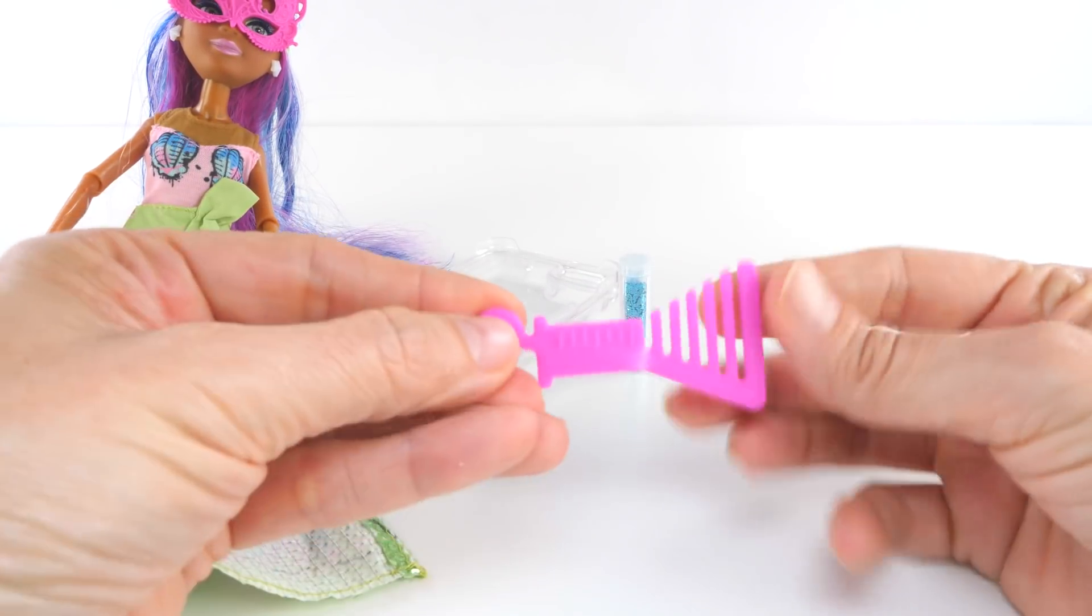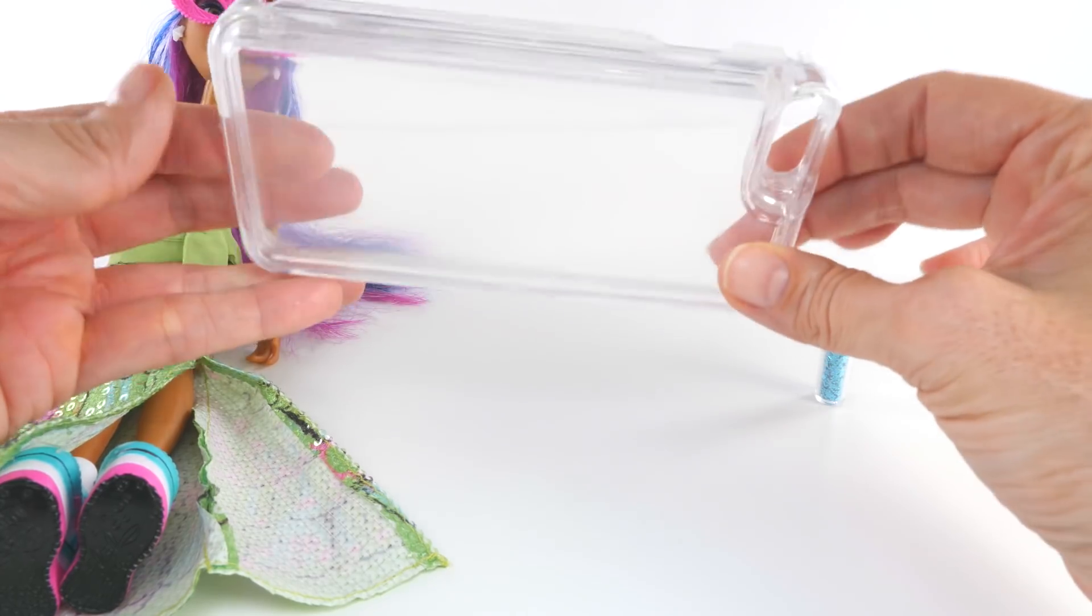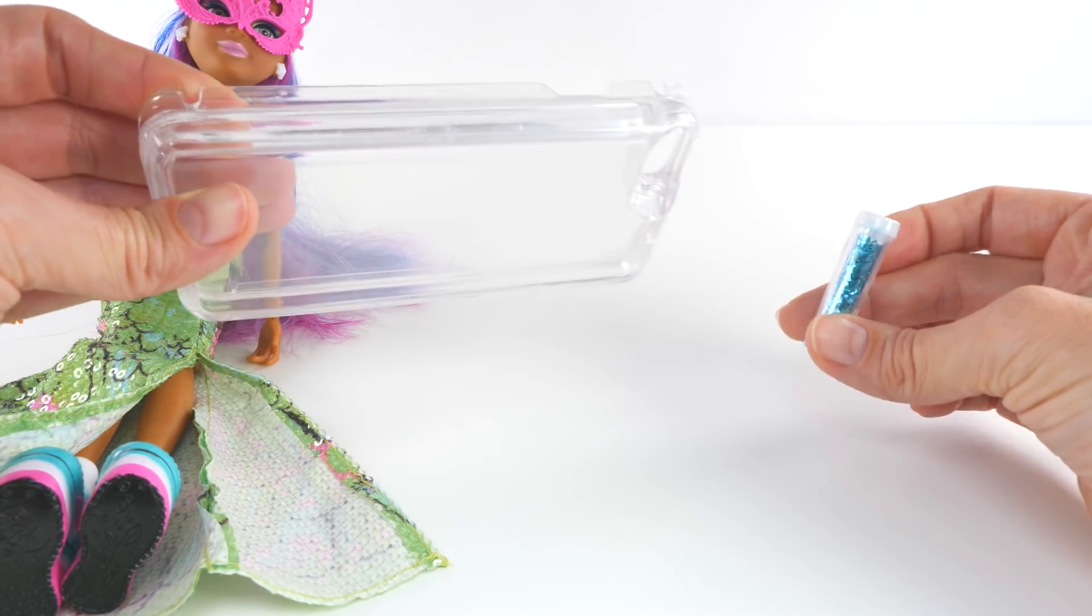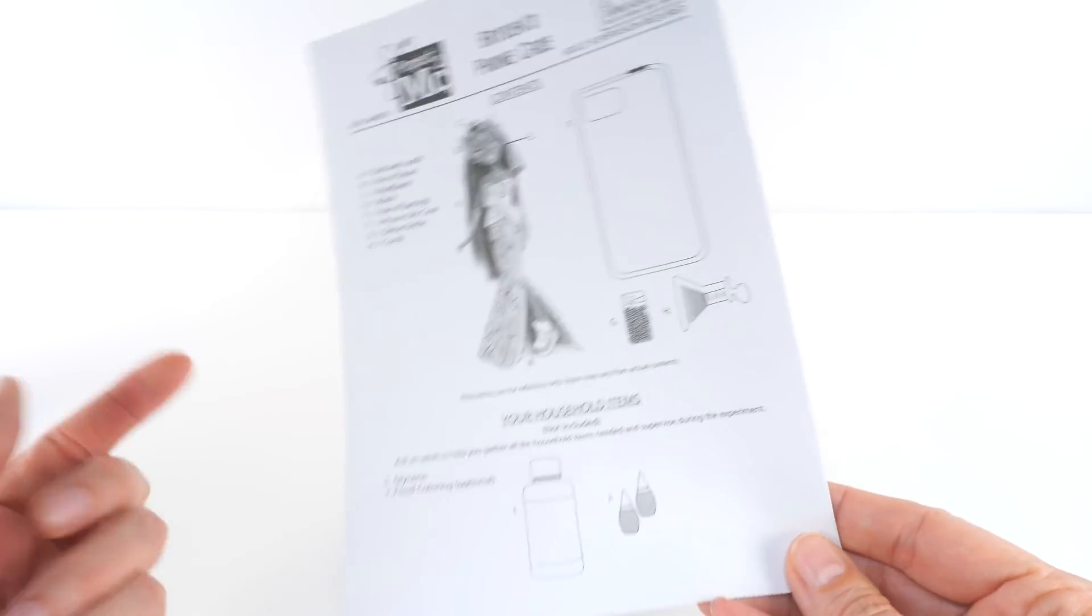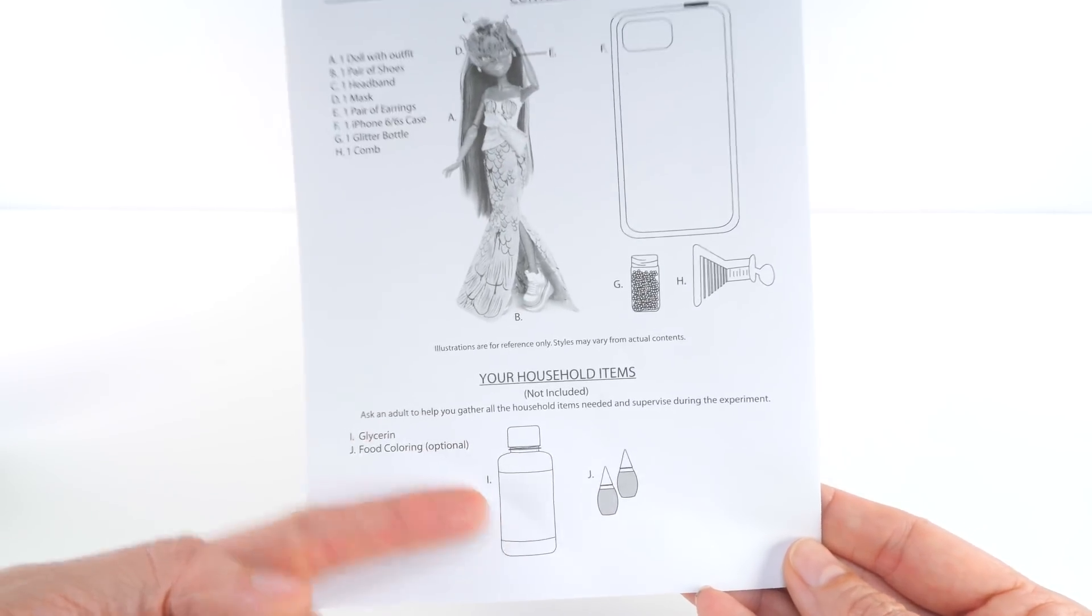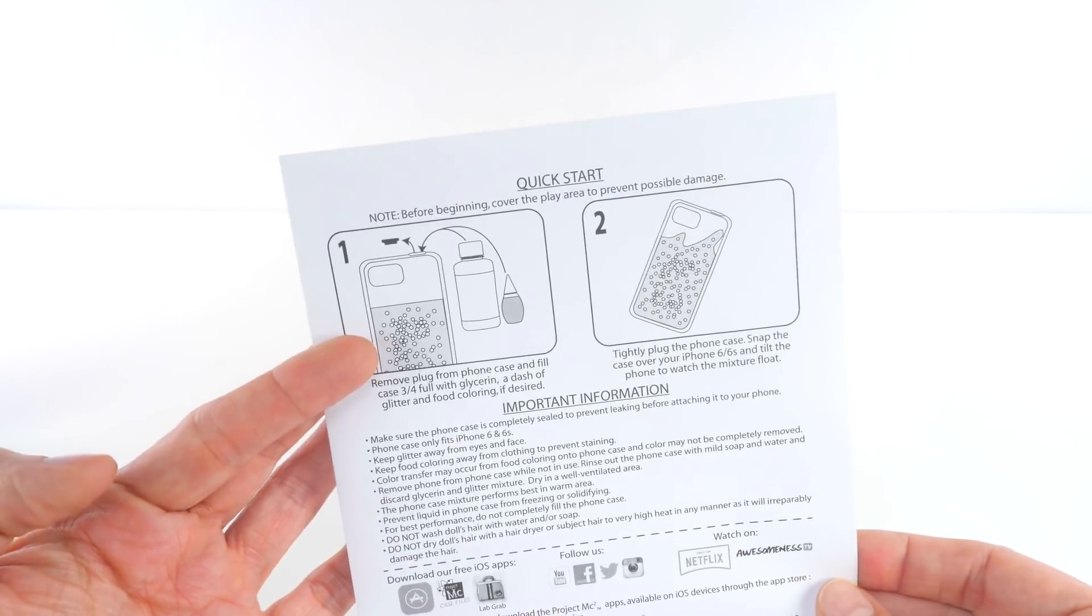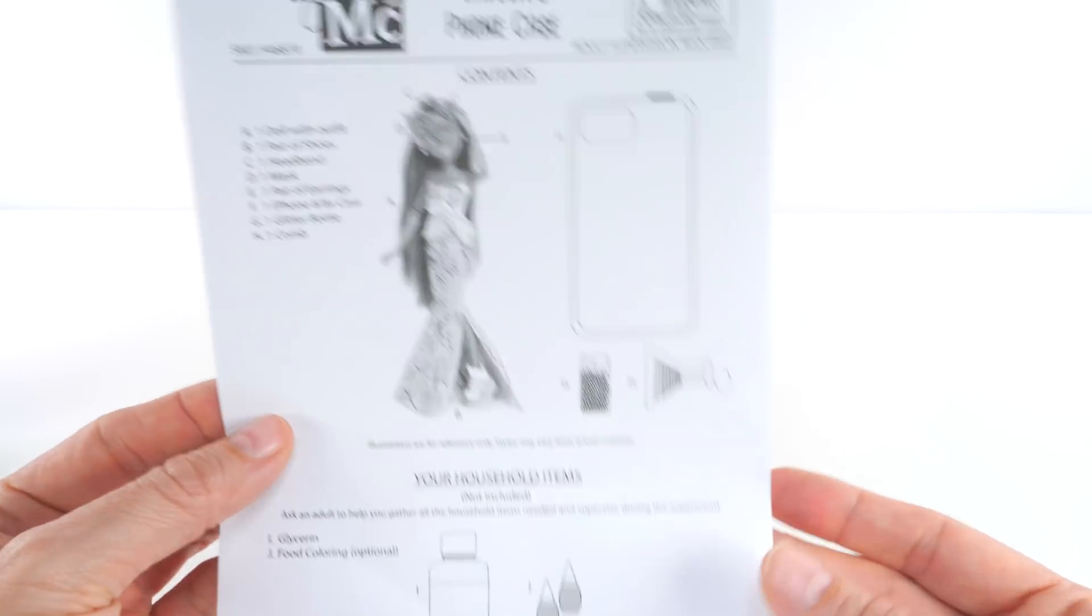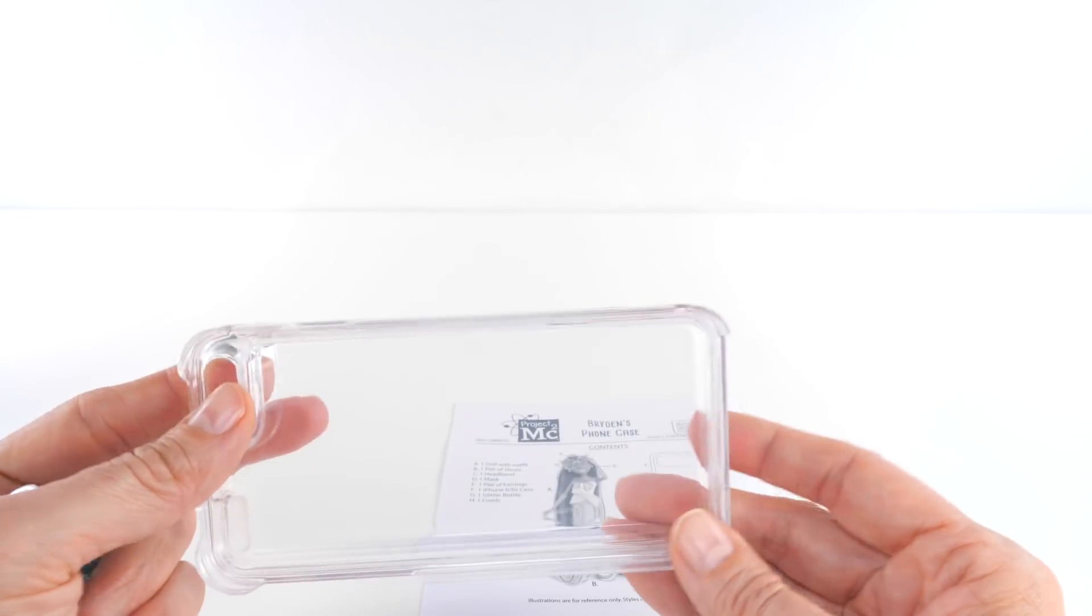The other things that come with the doll are a comb to comb her hair and then an iPhone case - this fits the iPhone 6 or 6s. I have a 6 and I desperately need a new case so it's perfect. Then we have some glitter, here are the instructions, and what we need from home is food coloring and glycerin. I actually don't have glycerin, I'm going to be using clear baby oil which is a perfectly fine substitution. Glycerin is a little thicker so the separation would look cooler if we had glycerin, but the clear baby oil will work. Even if you didn't have that you could use olive oil or cooking oil, it would turn it yellow but it would work.